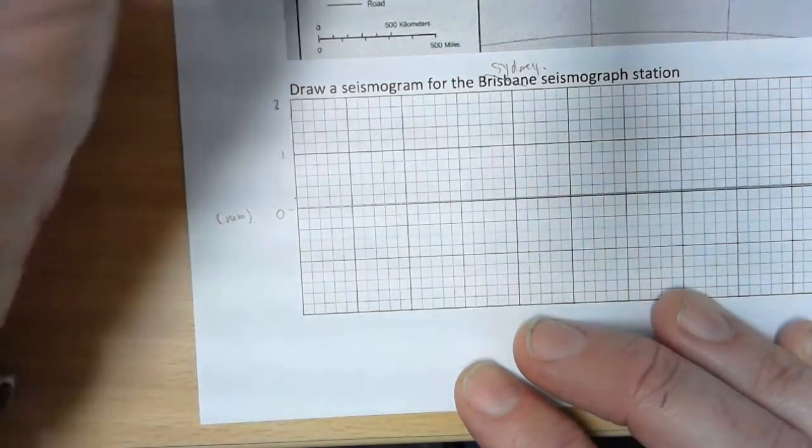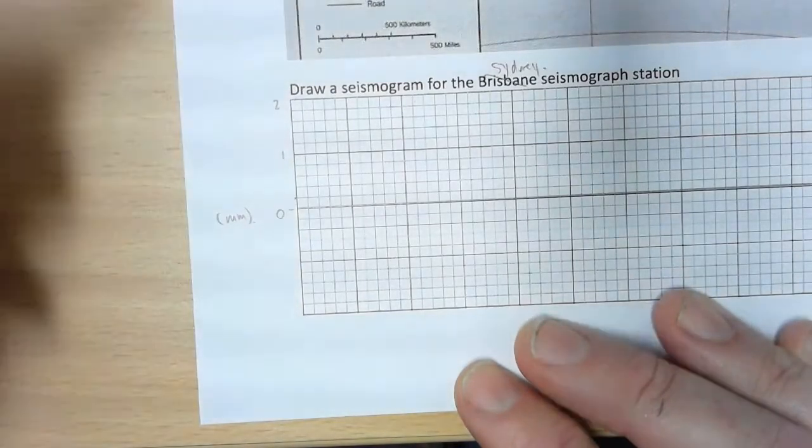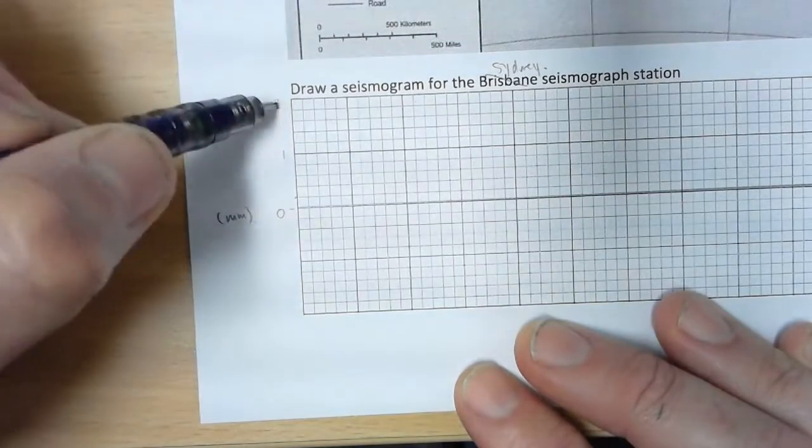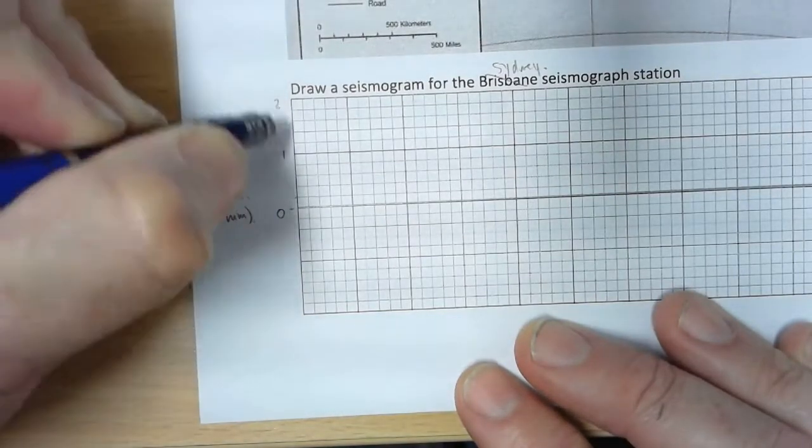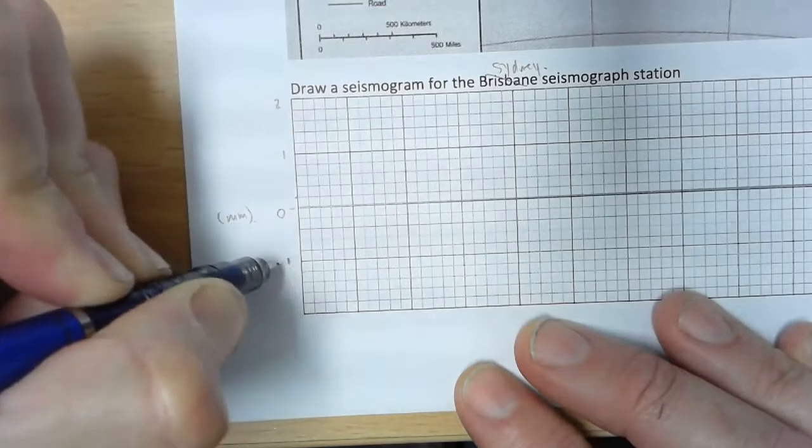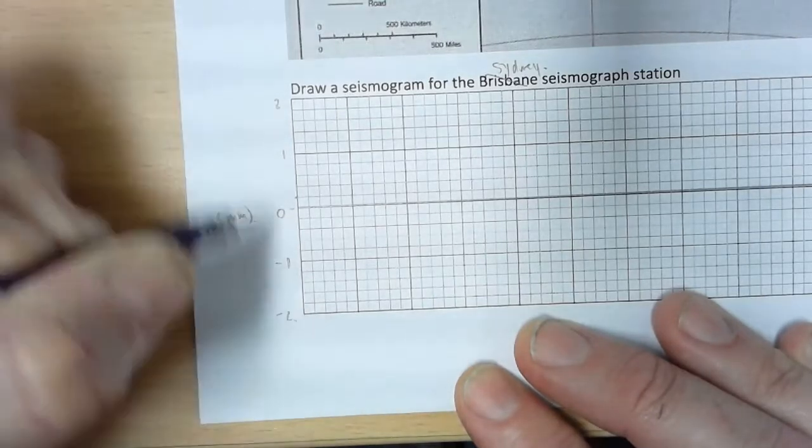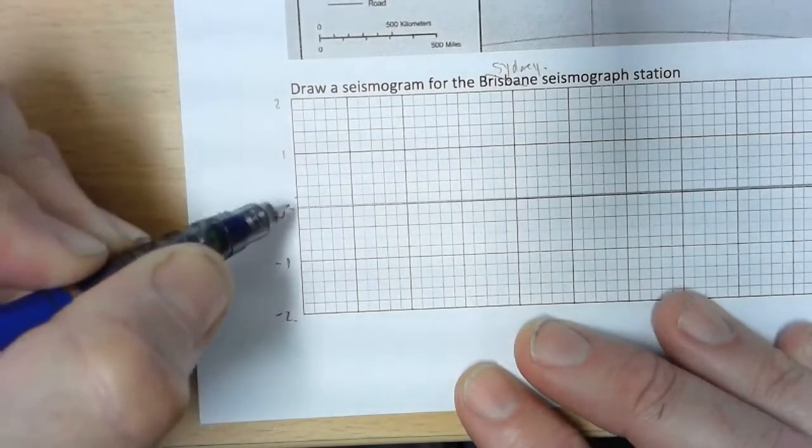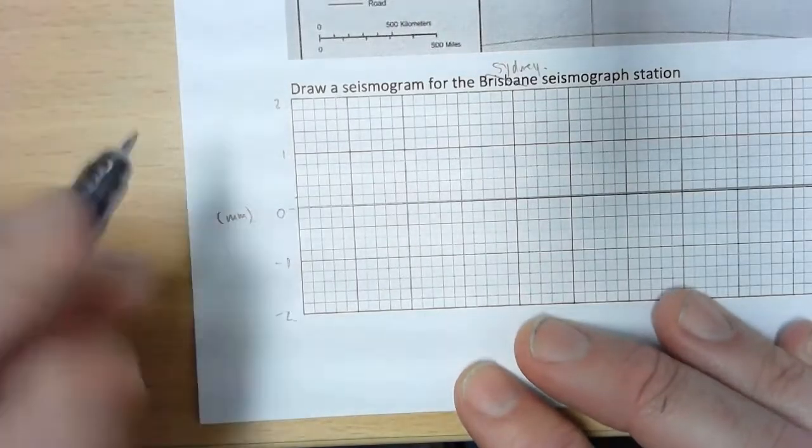Given that the maximum amplitude of the S wave is 2 millimeters, I've gone ahead and said, okay, let's just use all of that: one, two millimeters. So we've got minus one and minus two. We need to start in the middle of our line, of our graph paper.